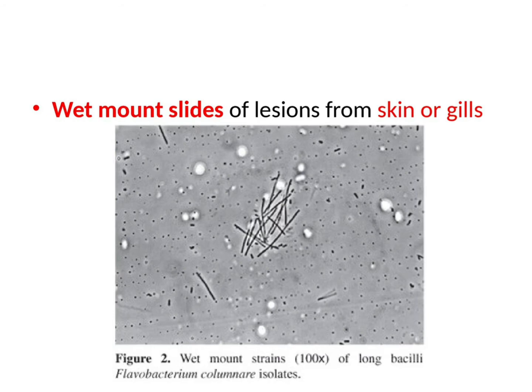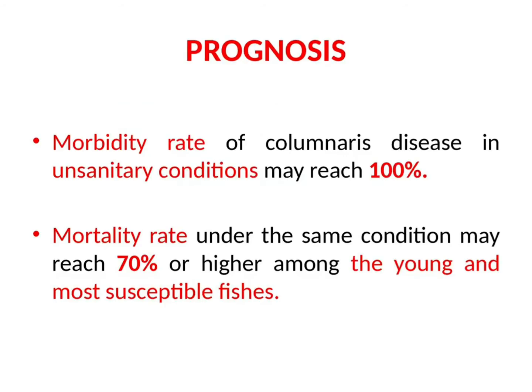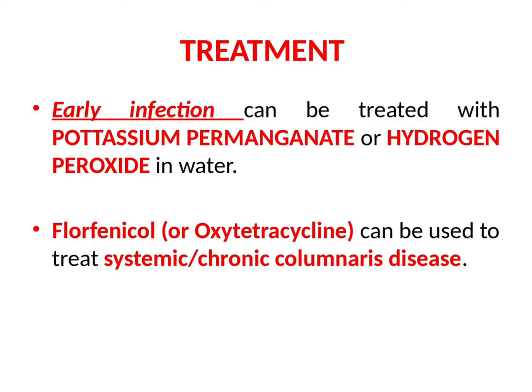Regarding prognosis, the mortality rate of columnaris disease in unsanitary conditions may reach 100%. Mortality rate under the same conditions may reach 70% or higher among young fish and the most susceptible species. Now let's see the treatment. Early infection can be treated with potassium permanganate or hydrogen peroxide in water. Florfenicol or oxytetracycline can be used to treat systemic or chronic columnaris disease. Florfenicol is the treatment of choice.